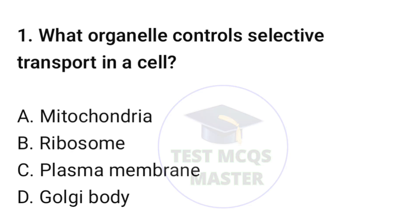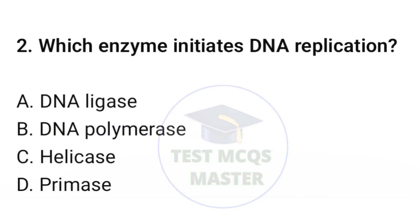Question number one: what organelle controls selective transport in a cell? The correct option is C, plasma membrane. Question number two: which enzyme inhibits DNA replication? The correct option is C, helicase.